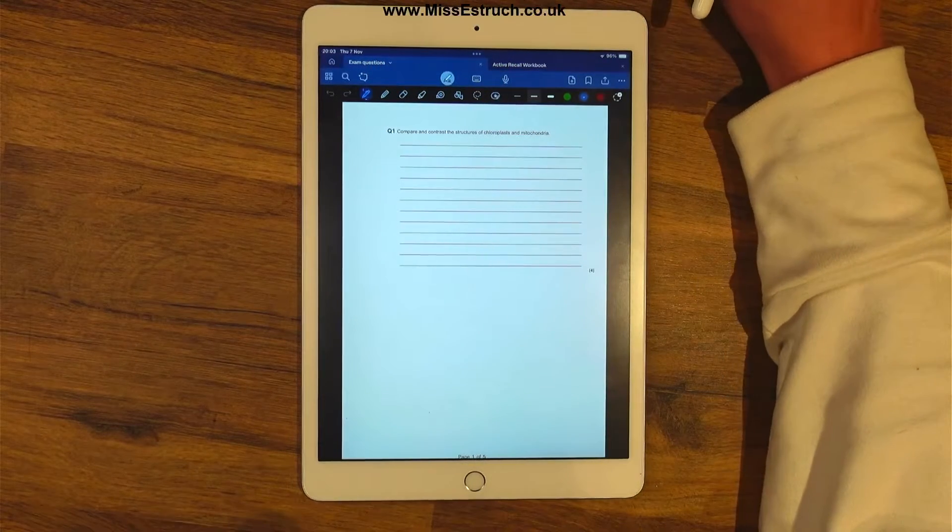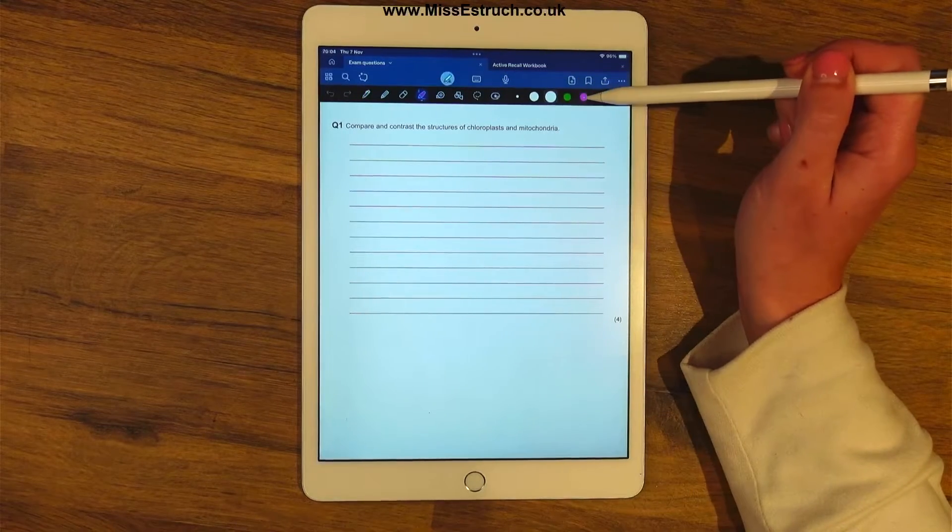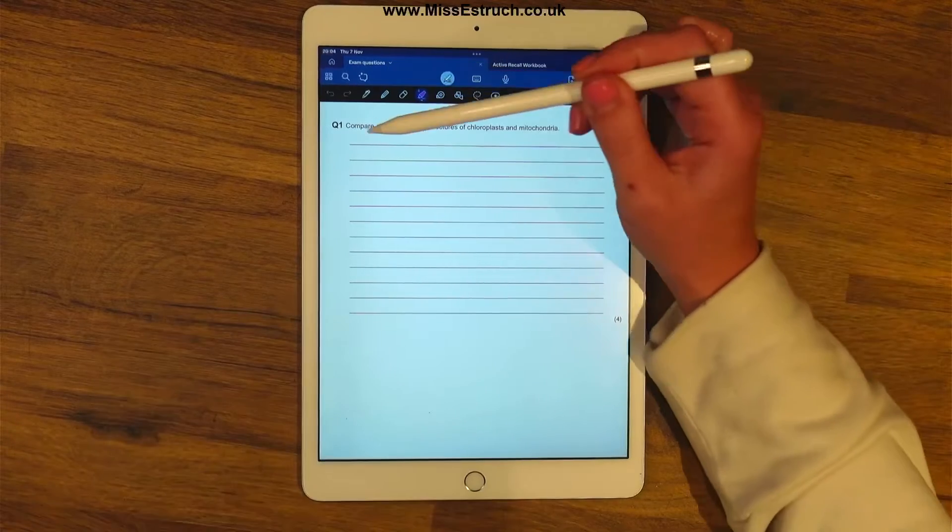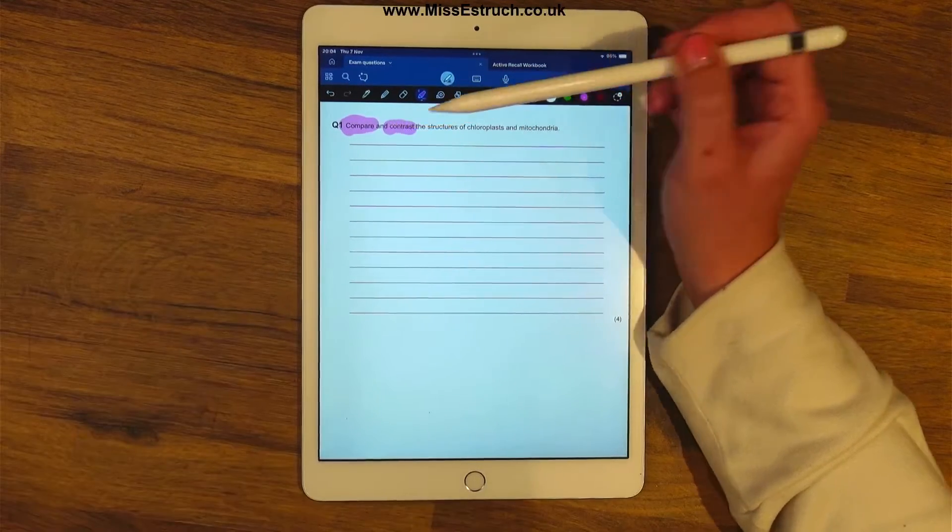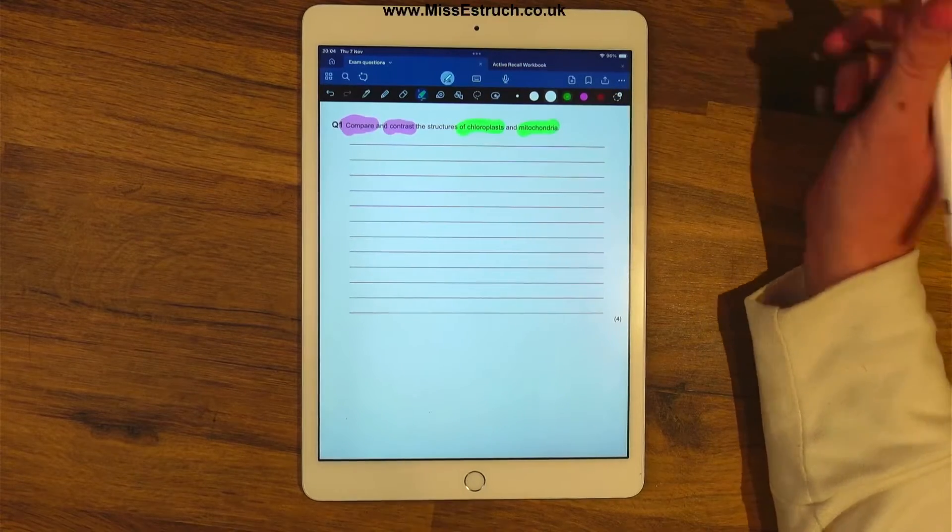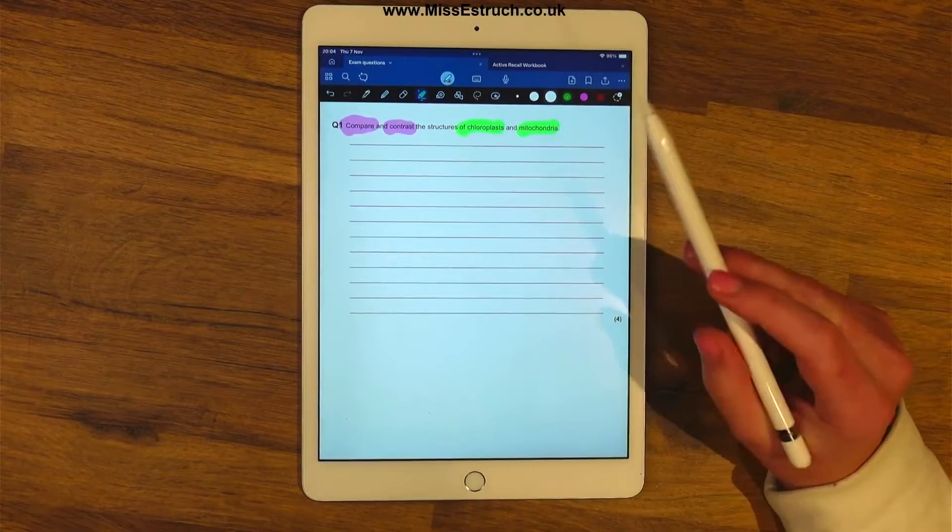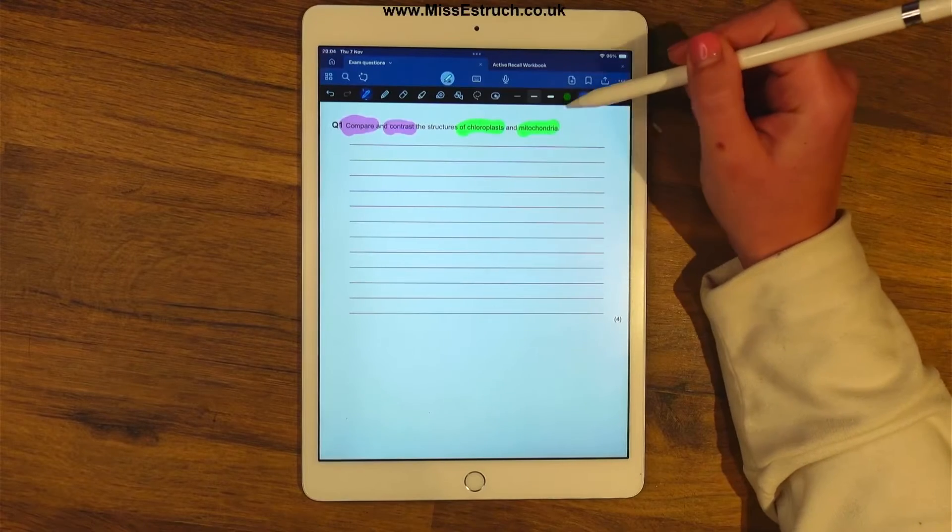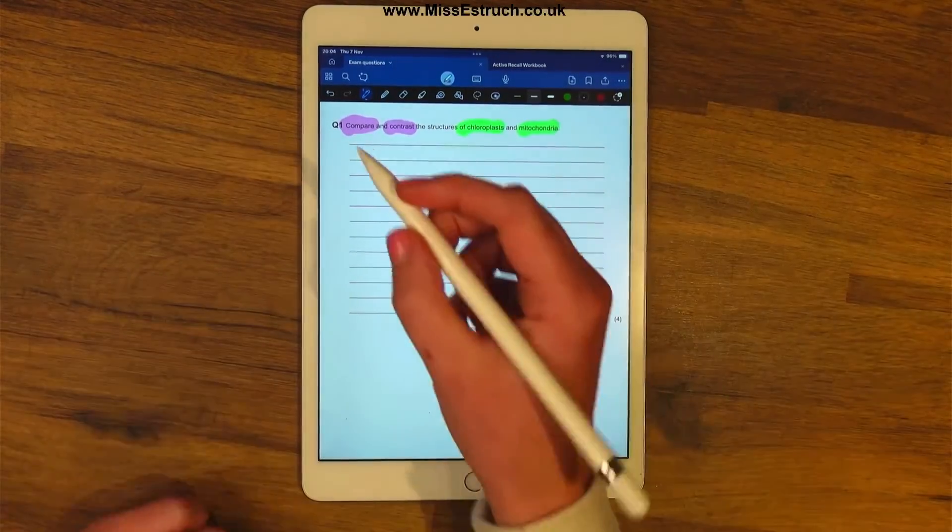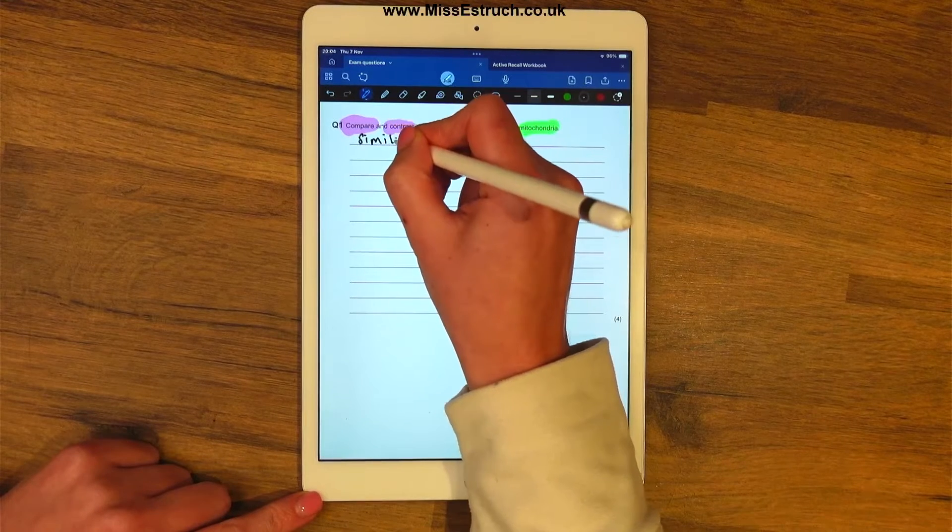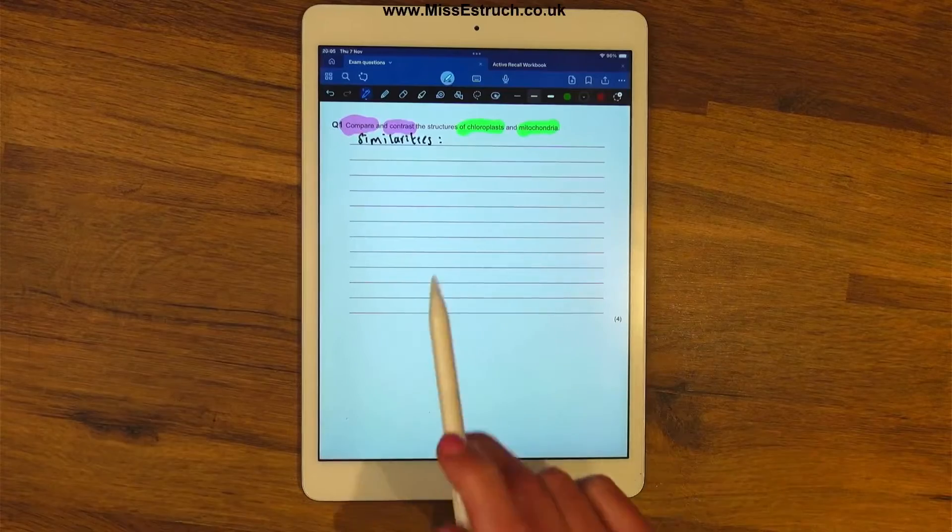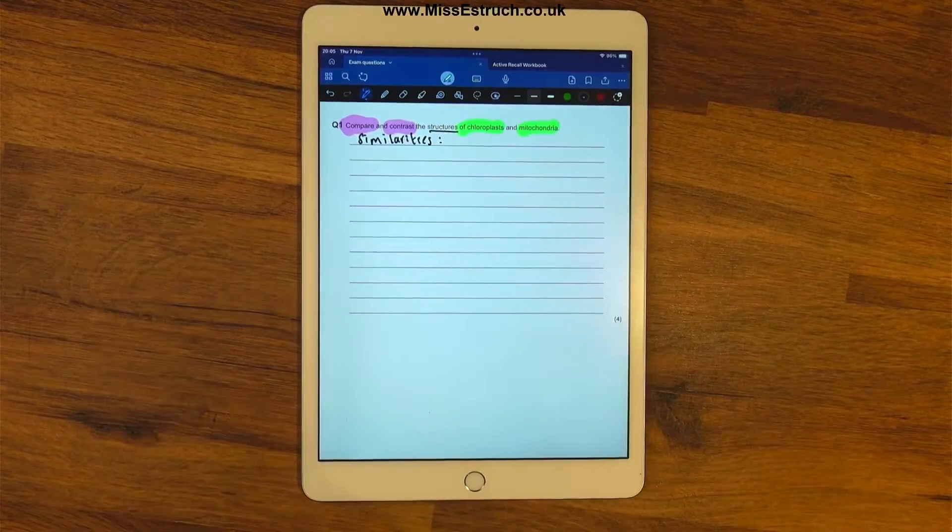So let's have a look at these exam questions next. We've got to compare and contrast the structures of chloroplasts and mitochondria. Oh my two favorite organelles, this question is made for me. So we are comparing which means similarities, contrasting means differences, and we're focusing on chloroplasts and mitochondria. So basically we need a list of similarities and differences between the two, and you need to make sure you've got comparative points and you can bullet point your answers. I'm going to start with similarities.